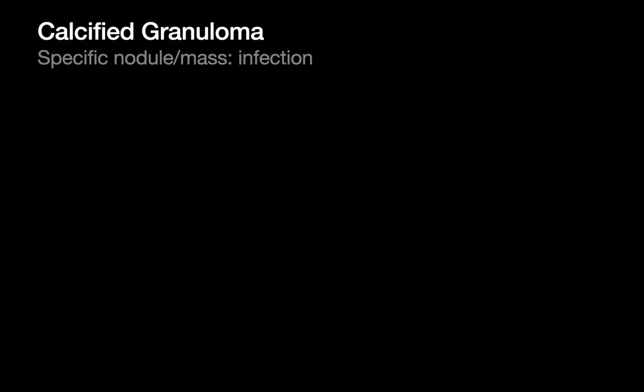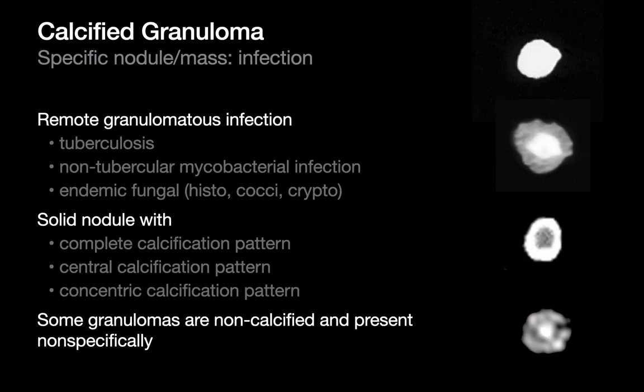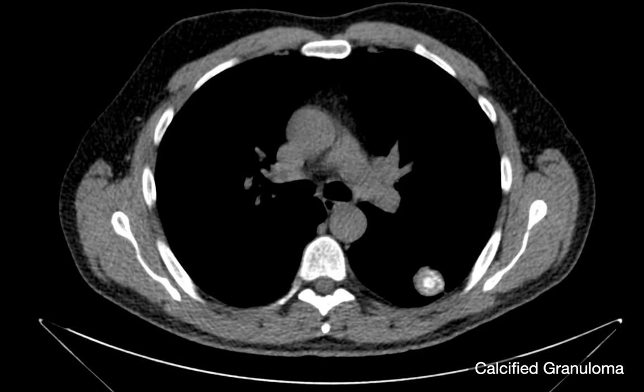The final entity on our infectious list is calcified granulomas — pretty common. Calcified granulomas that are uniformly calcified throughout, centrally calcified, or have a targetoid calcification pattern — these are all benign calcification patterns that are highly specific for a granuloma. So if I see a nodule that looks like this, we can be quite confident we're dealing with a granuloma and not have to worry about working it up as a nonspecific nodule.